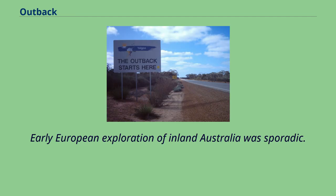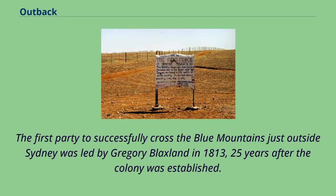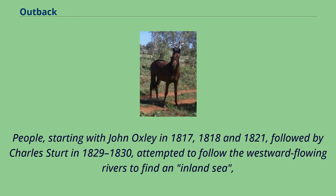Early European exploration of inland Australia was sporadic, with more focus on the more accessible and fertile coastal areas. The first party to successfully cross the Blue Mountains just outside Sydney was led by Gregory Blaxland in 1813, 25 years after the colony was established. People starting with John Oxley in 1817, 1818 and 1821 attempted to follow the westward flowing rivers to find an inland sea.